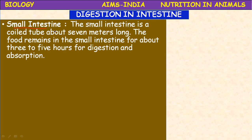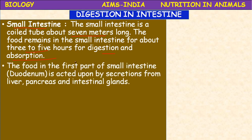The small intestine is a coiled tube about seven meters long. The food remains in the small intestine for about three to five hours for digestion and absorption — the total process of digestion completes in the small intestine. In the first part of the small intestine, called the duodenum, the food is acted upon by secretions from digestive glands like the liver, pancreas, and intestinal glands.